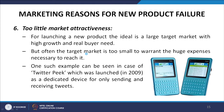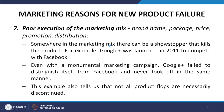The sixth reason is too little market attractiveness. The ideal is a large target market with high growth and real buyer need, but often the target market is too small to warrant the huge expenses necessary to reach it — for example, Twitter Peek, launched in 2009 as a device only for sending and receiving tweets. The seventh reason is poor execution of the marketing mix — that is, brand name, packaging, price, promotion, and distribution — where a show stopper in any element can kill the product.